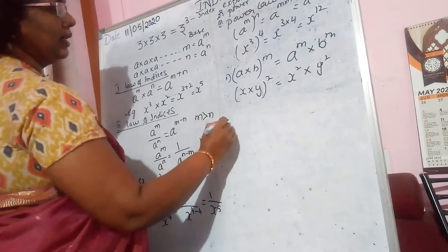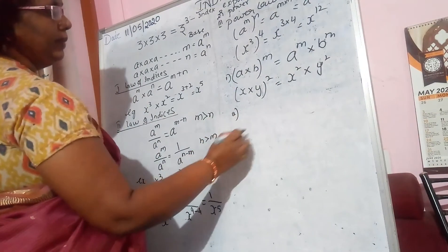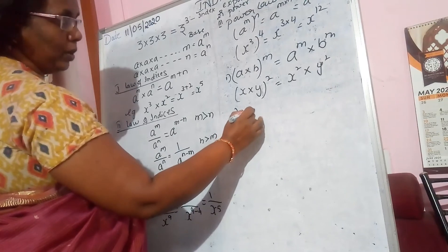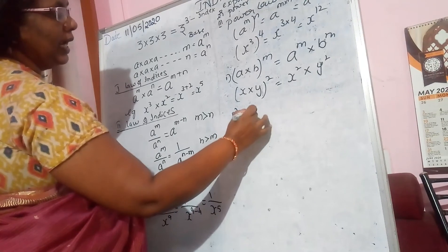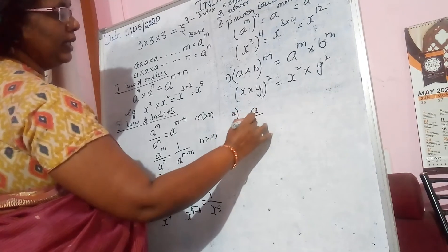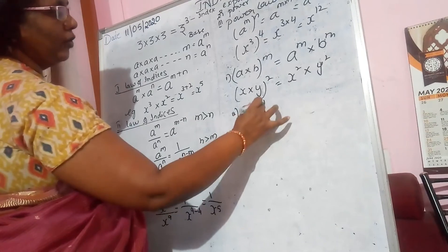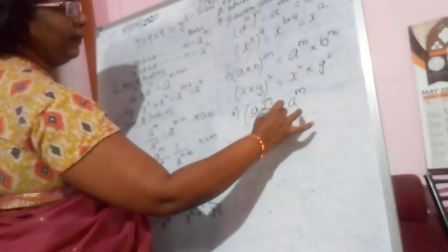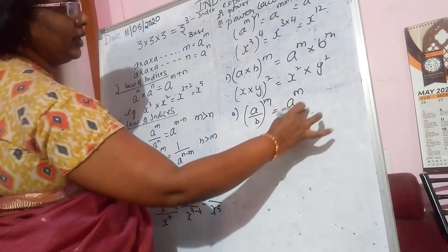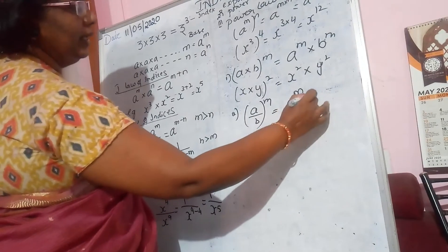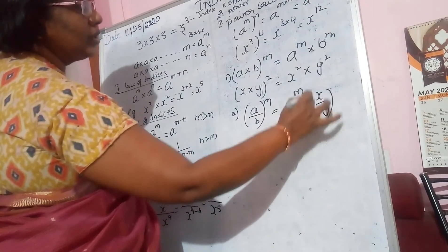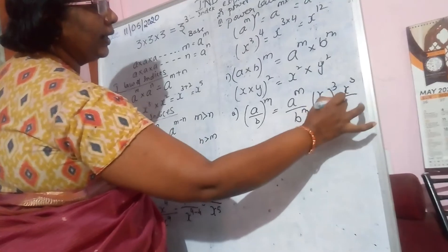Second: when a quotient (a by b) is raised to the power of m, it becomes a raised to the power of m by b raised to the power of m. For example, (x by y) raised to the power of 3 equals x cubed by y cubed.